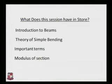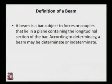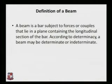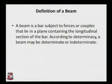Starting with the definition of a beam: a beam is basically a bar subjected to forces or couples that lie in a plane containing the longitudinal section of the bar. According to determinacy, a beam may be determinate or indeterminate. In simple terms, a beam is a horizontal structural member whose length is much greater compared to its depth and width.